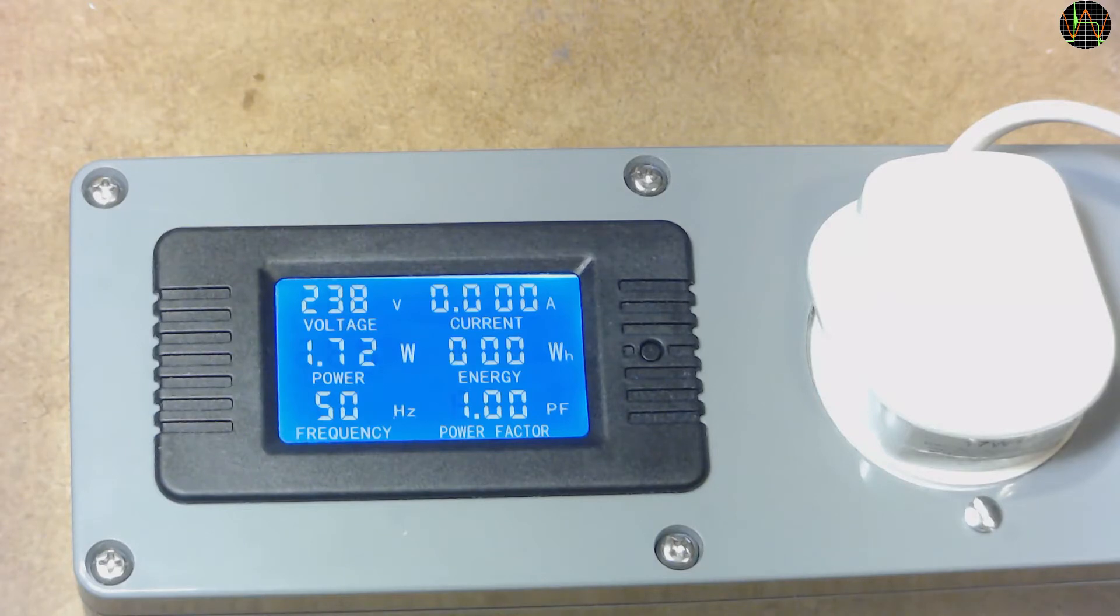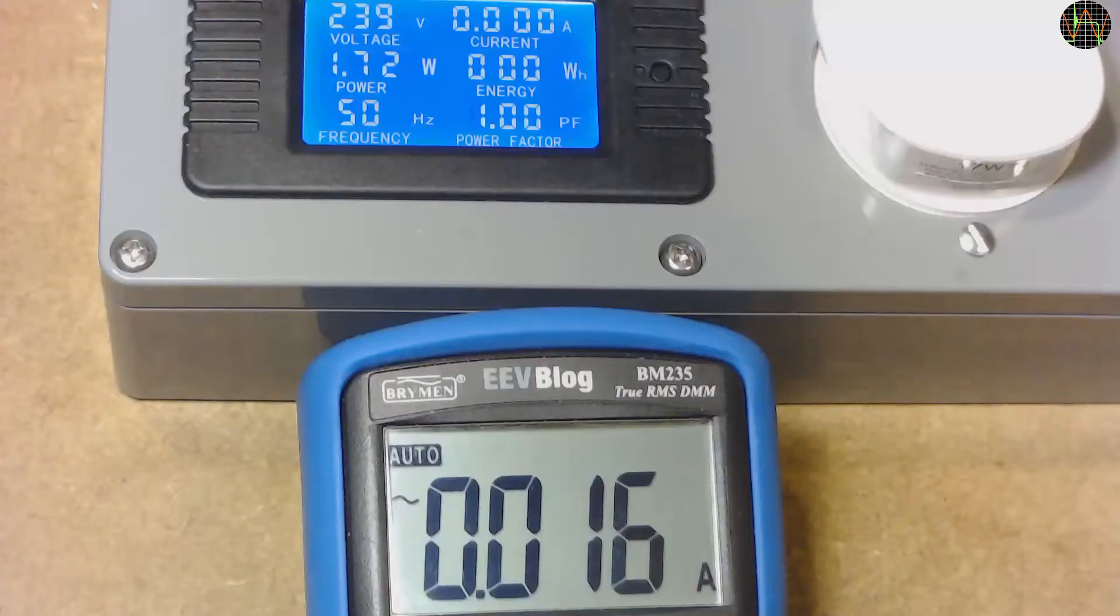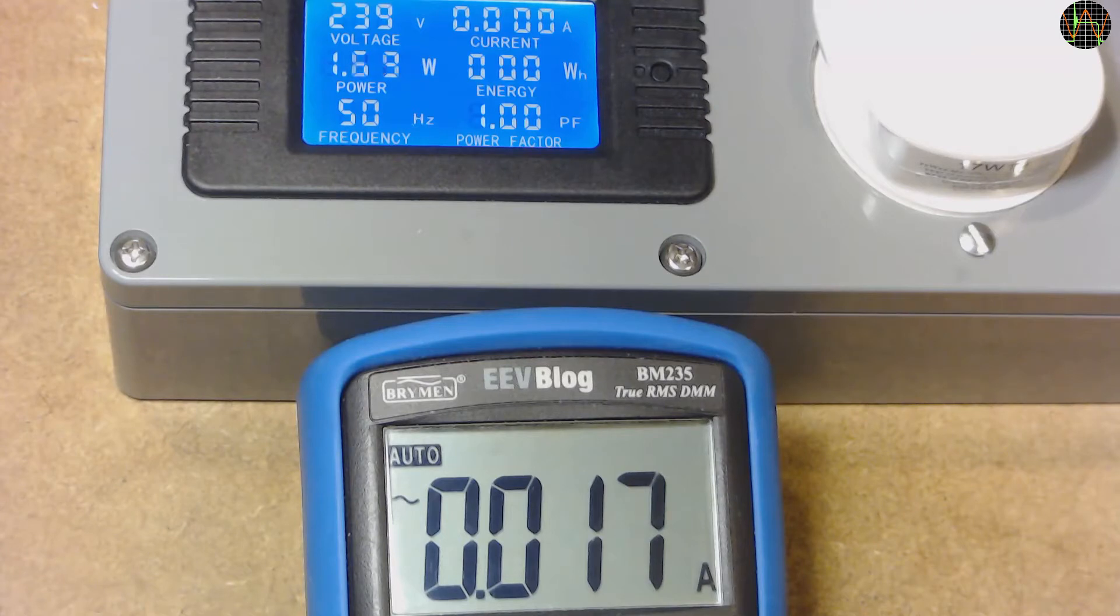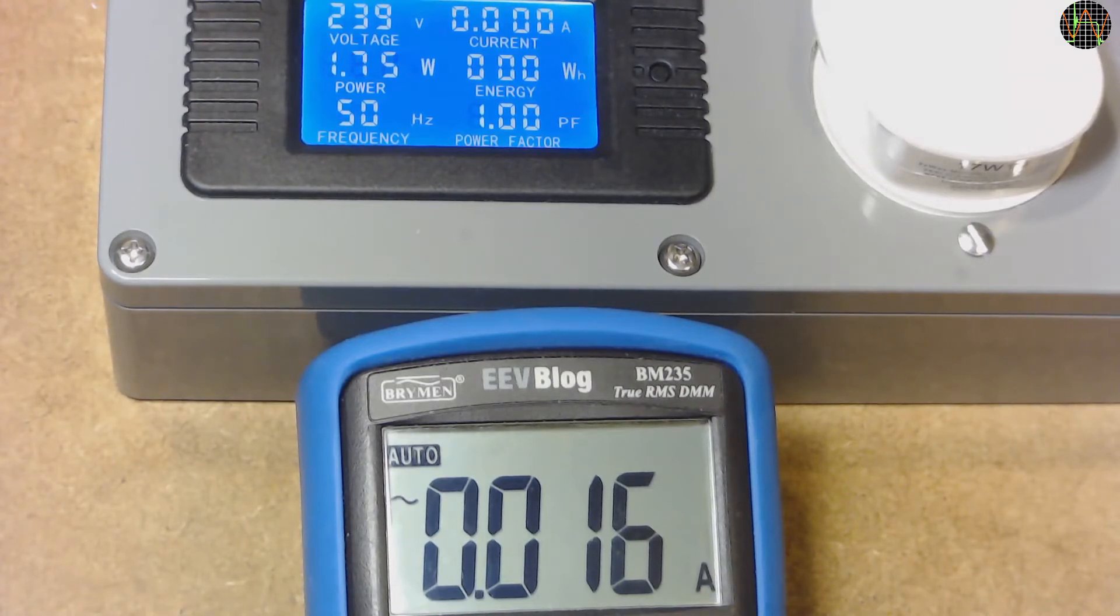Not so fast. See that the current is zero. This is the limit of this power meter. It doesn't display reliable current and power factor if the current is lower than around 20mA. Putting the trusty BM235 meter in series with the mains to measure the current shows we are drawing 16mA. This means the current power is 3.8VA and the power factor should be 0.44. The power meter is really more geared towards loads that use at least 2-3W real power.